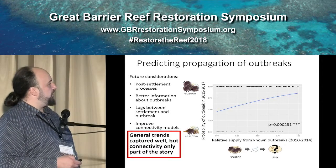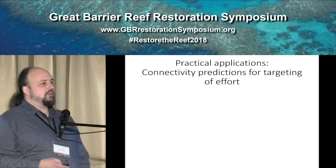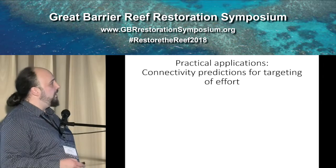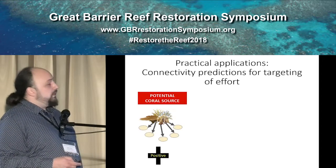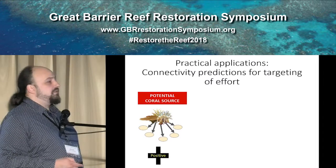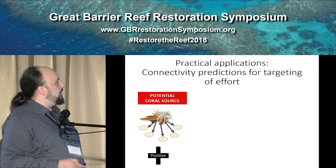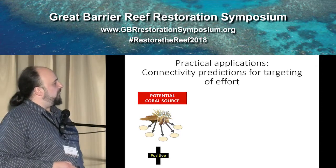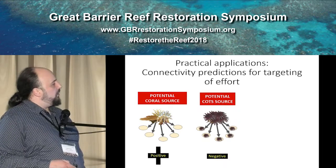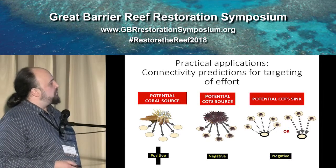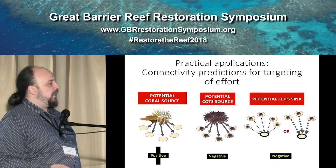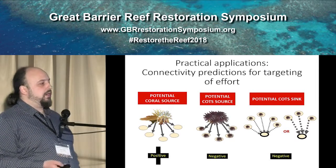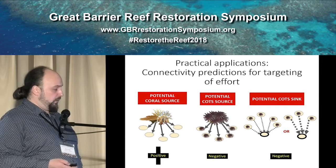When we come to practical applications, we want to categorize reefs for prioritization, and this has been done in collaboration with GBRMPA and Mary Bonin. We decided to categorize reefs into three major categories: potential coral sources — the positive thing — potential COTS sources — which is a negative thing — and potential COTS sinks. Potential coral sources are going to help recovery, COTS sources are going to make the situation worse, and potential COTS sinks are going to have higher risk of having COTS.